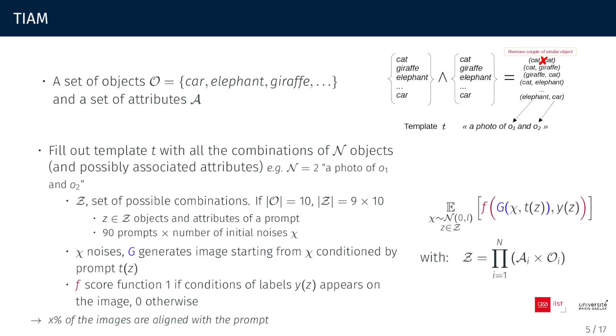So how does TIAM work? We define a set of objects and optionally a set of attributes. We create a template T to be filled out with all possible combinations of N objects and attributes, forming the set of prompts. We establish a set of noises to initiate the reverse diffusion process. It is important to generate multiple images per prompt to take account of the random nature of model's success. We then generate images conditioned by the prompt and detect the presence of mentioned objects and attributes. We grade each image accordingly. Finally, we compute the mean of all grades to determine the proportion of aligned images.